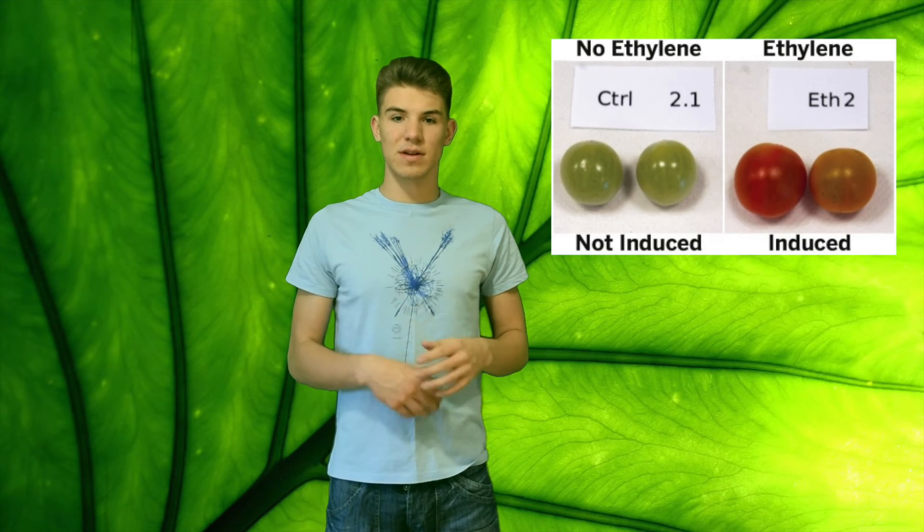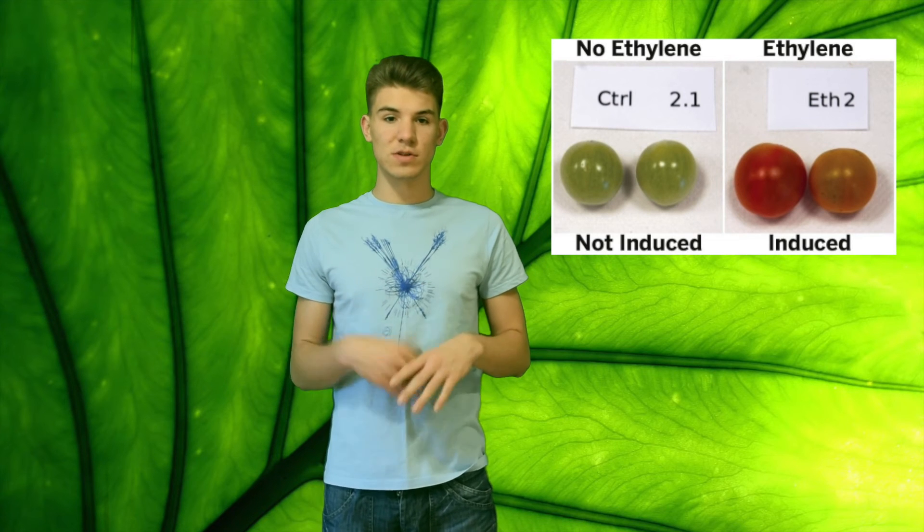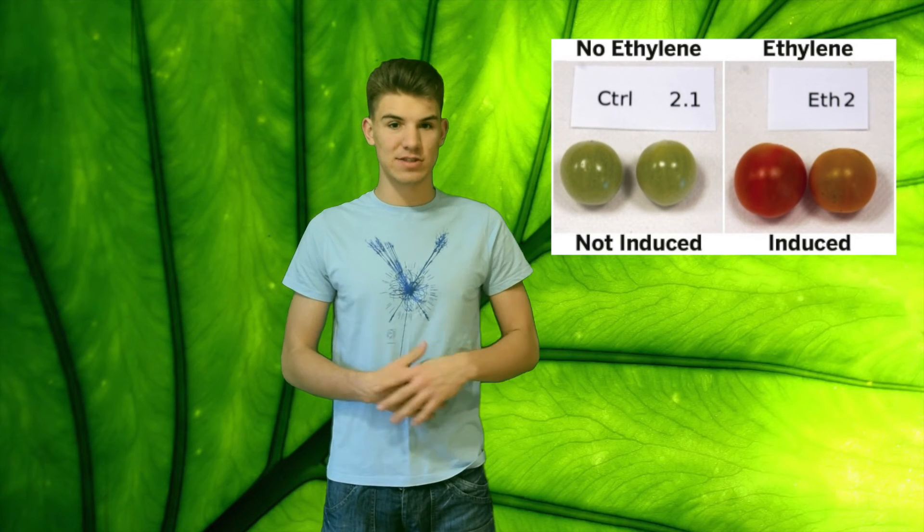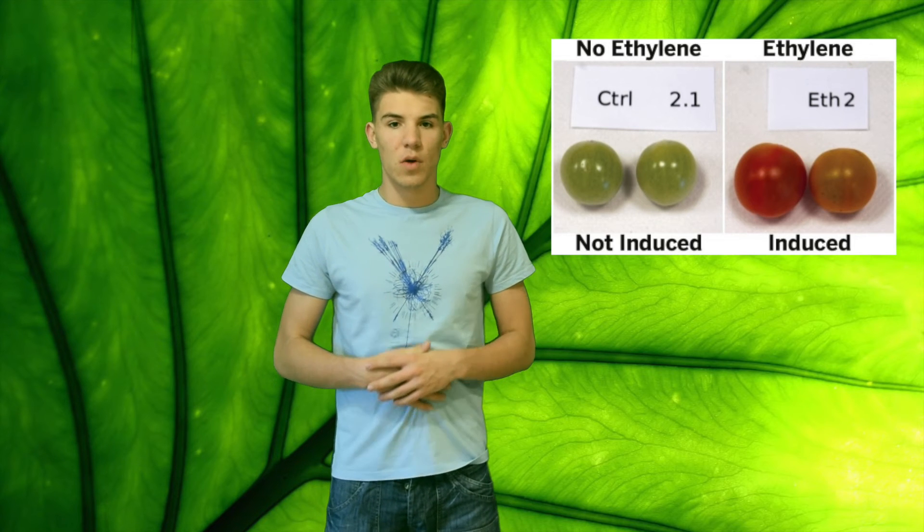Ethylene is much more crucial to us consumers than it is to the plant actually. Without ethylene, there would be no fruits that are fully grown — all of them would be unripe. Ethylene helps fruits ripen by making them softer, by breaking down components of cell walls, and making them a little sweeter by converting starches into sugars. Ethylene is actually a gas, so it's distributed through the air. If you put an unripe banana into a bag with a ripe banana, the unripe banana will become softer thanks to the ethylene released into the air from the ripe banana.